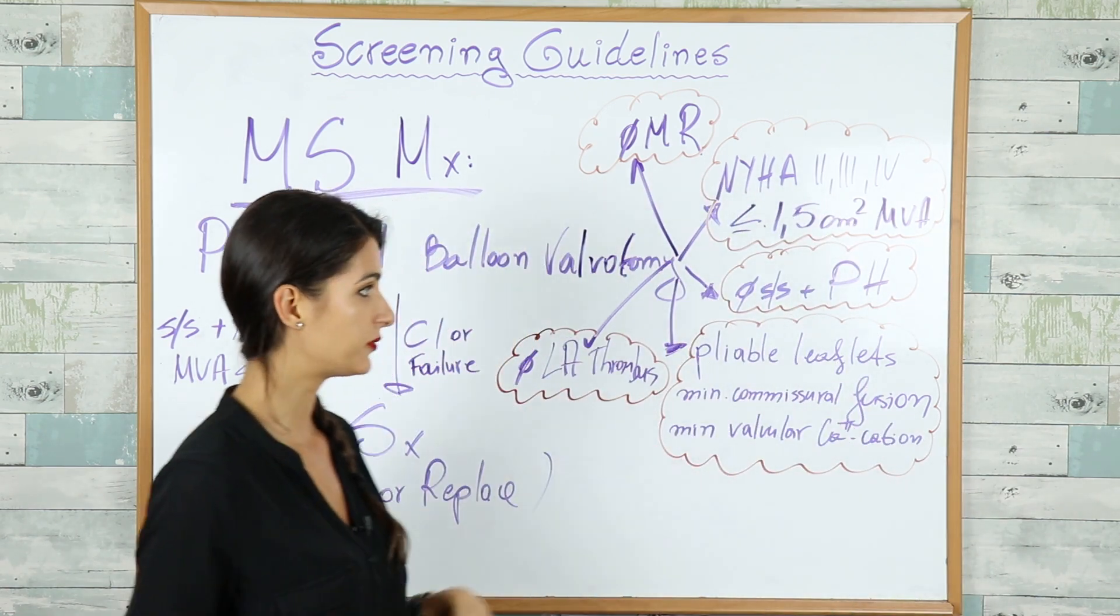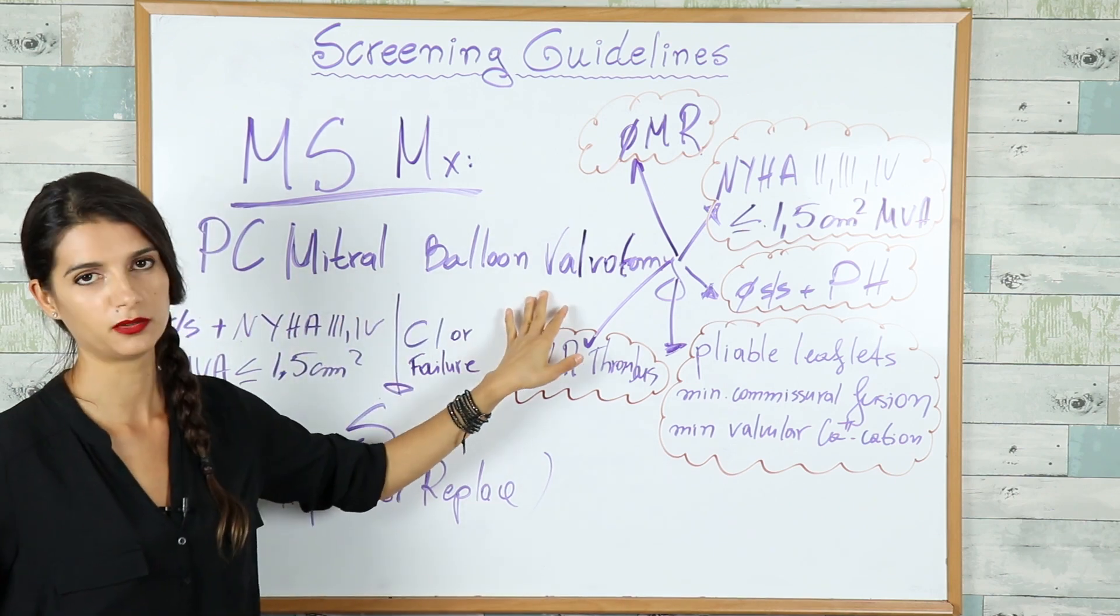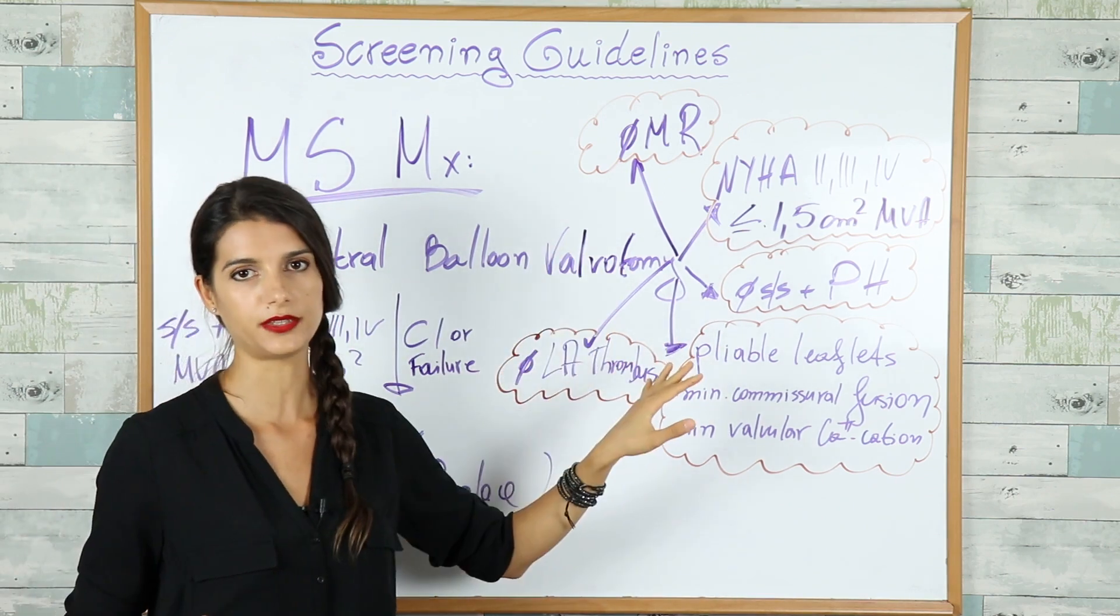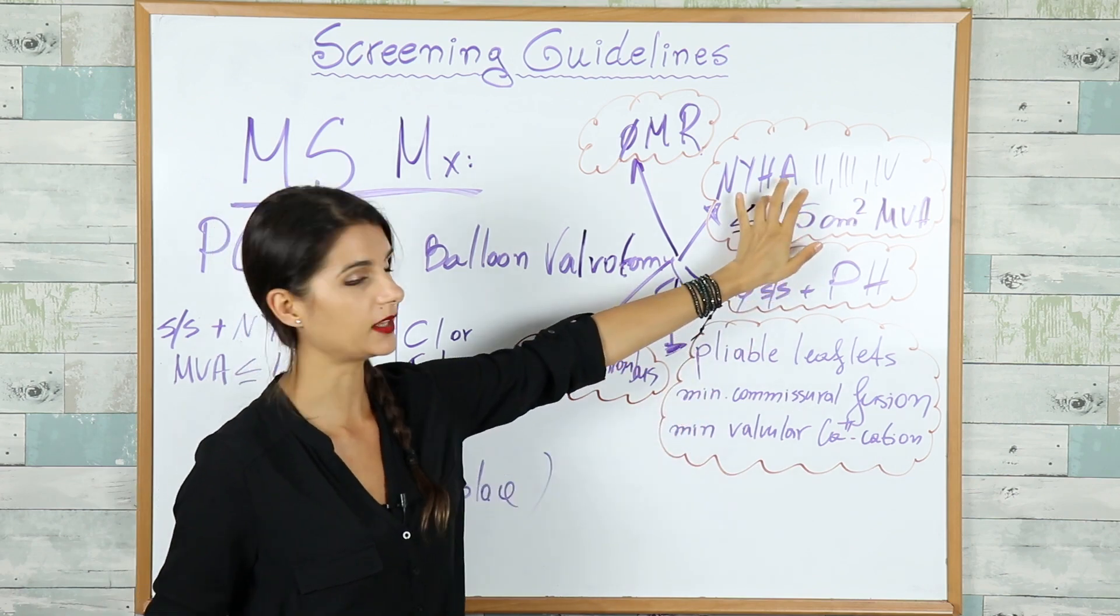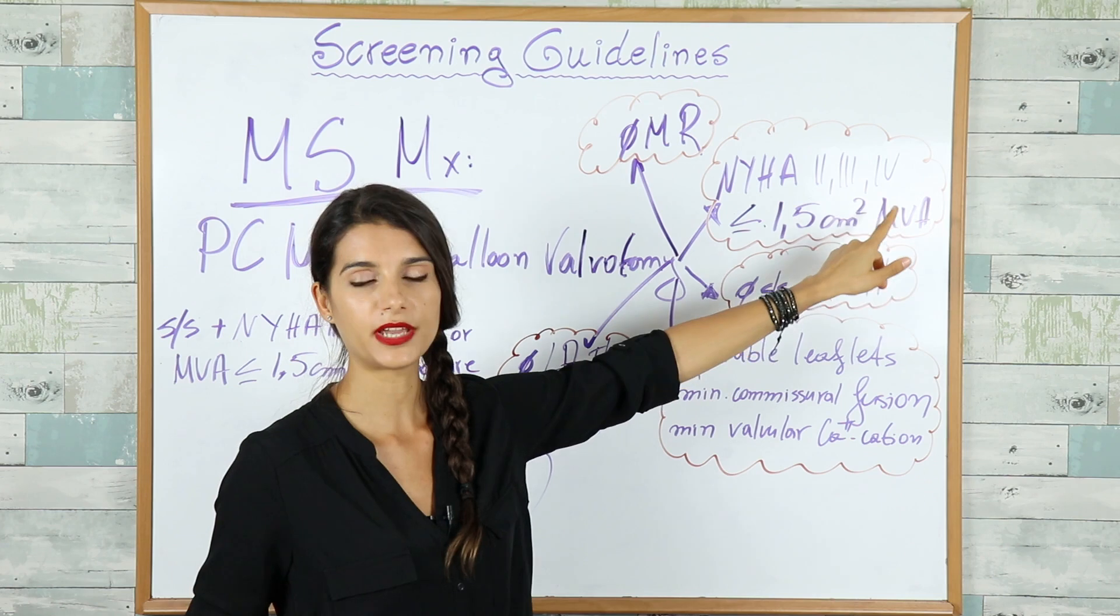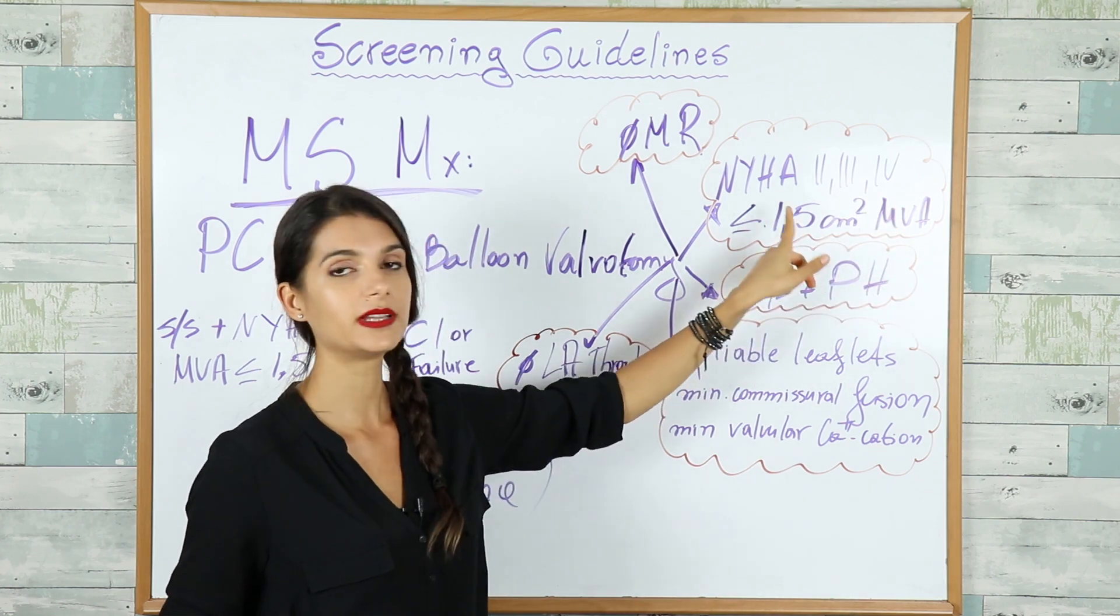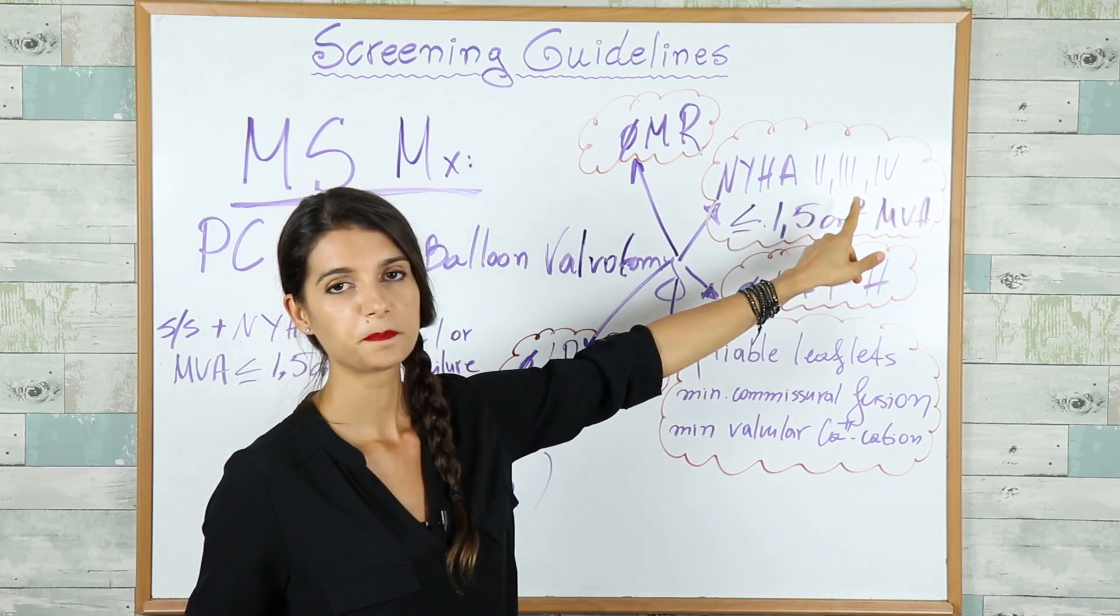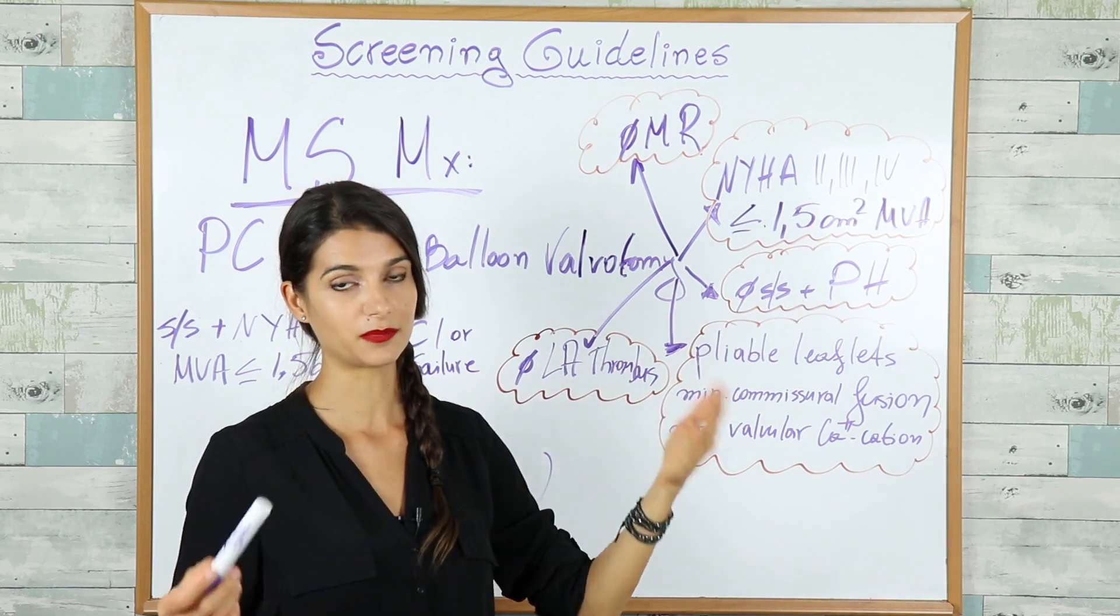We can perform percutaneous mitral balloon valvotomy in patients who meet the following criteria. They should be in NYHA functional class 2, 3, or 4, and their mitral valve area has to be less than or equal to 1.5 centimeters squared where the patients actually become symptomatic.